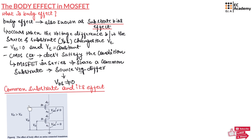Now let us understand the body effect with a diagram. If you look at this figure, there are two N-type transistors connected in series. In transistor 1, the source is connected to ground; therefore VSB1 will be equal to 0, so the voltage between the source and substrate in transistor 1 will be equal to 0.